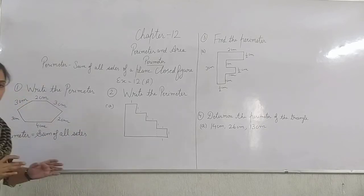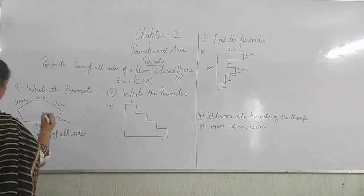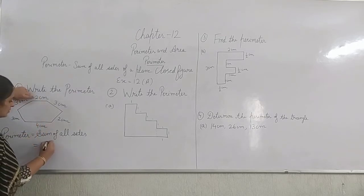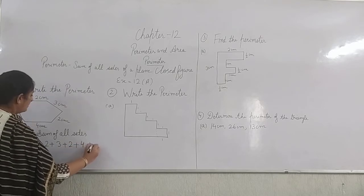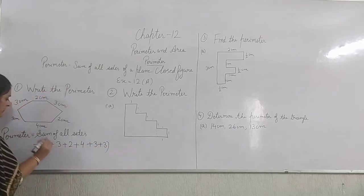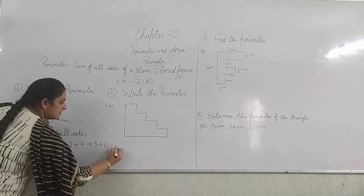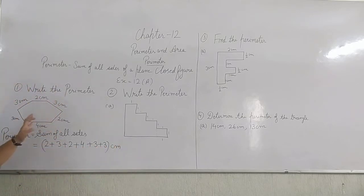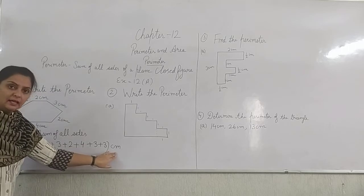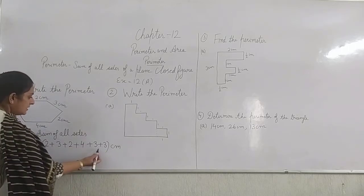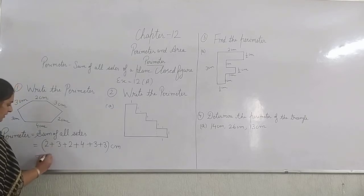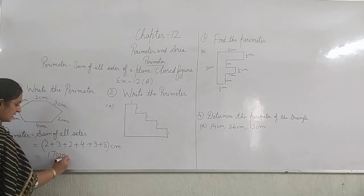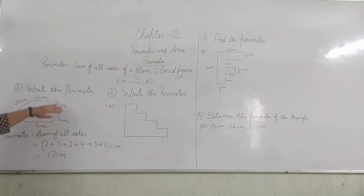The sum means we will add all the sides. So: 1 plus 2 plus 3 plus 2 plus 4 plus 3 plus 3, all in centimeters — that is the unit given with the measurements. Adding: 3 plus 3 is 6, plus 4 is 10, plus 2 is 12, plus 3 is 15, plus 2 is 17 centimeters.